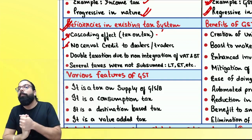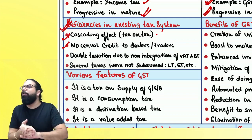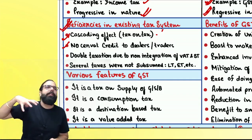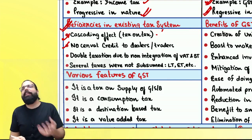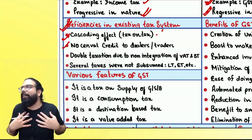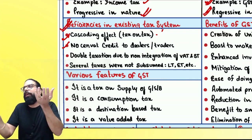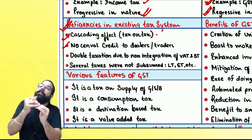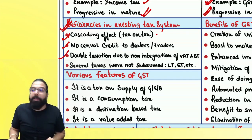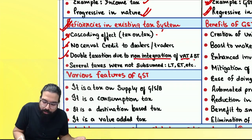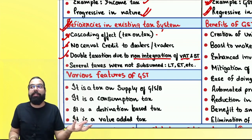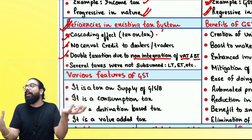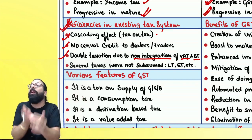Second: no CENVAT credit to traders or dealers. When a manufacturer sold goods and charged excise duty, that excise duty credit was never available to me as a trader or dealer. So it became part of my cost, and tax on tax started again. Third: double taxation because of non-integration of VAT and service tax. As a teacher charging service tax, the VAT I paid on goods I bought to teach could never be used against service tax — hence double taxation.